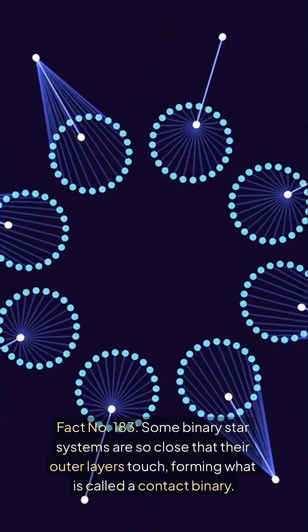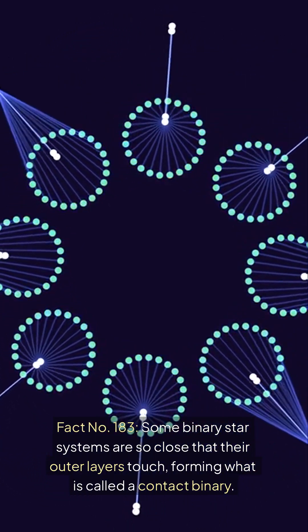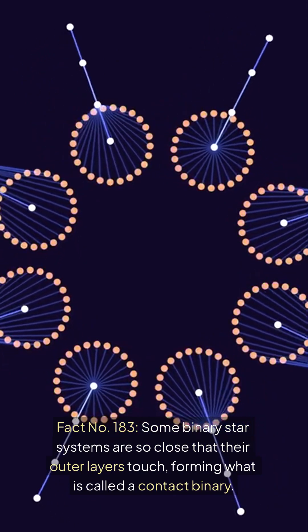Fact number 183, some binary star systems are so close that their outer layers touch, forming what is called a contact binary.